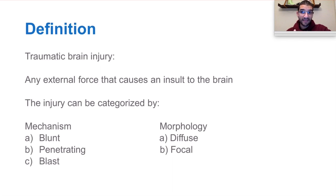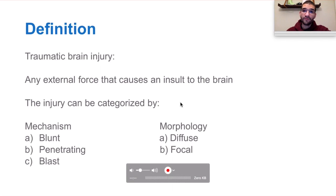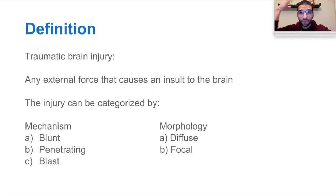Another thing you see with blast injuries is cerebral vasospasm. You can also define traumatic brain injury by morphology — for example, whether the injury is diffuse or focal, meaning localized to one spot.